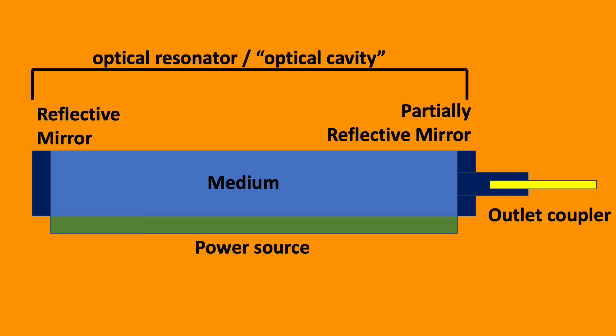The optical resonator or optical cavity consists of the laser medium and also two mirrors. The mirror on the left side is highly reflective and the one on the right side is partially reflective. The partially reflective mirror allows the laser beam to enter the outlet coupler and pass out of the laser.